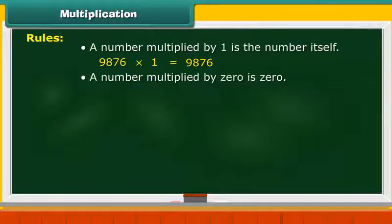A number multiplied by 0 is 0. 5679 multiplied by 0 is equal to 0.